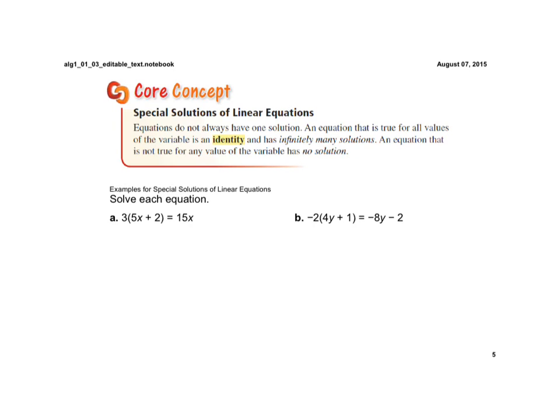When we have variables on both sides of the equal sign, there's a special case that can happen. Actually, there's two special cases that can occur. Equations do not always have one solution. An equation that is true for all values of the variable is called an identity and has infinitely many solutions. An equation that is not true for any value of the variable has no solution. Let's take a look at these two examples. The first one, I'm going to distribute through to get rid of the parentheses and I get 15x plus 6 equals 15x.